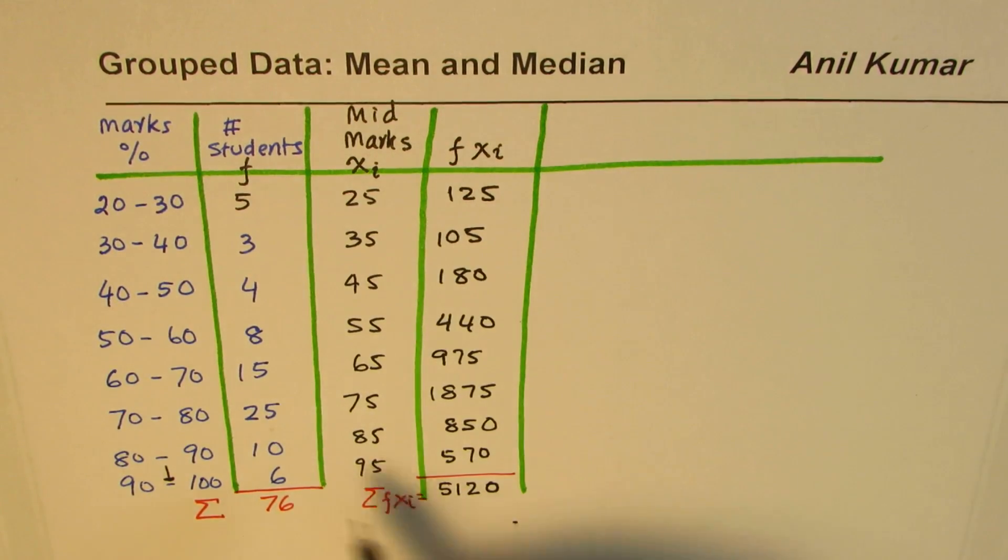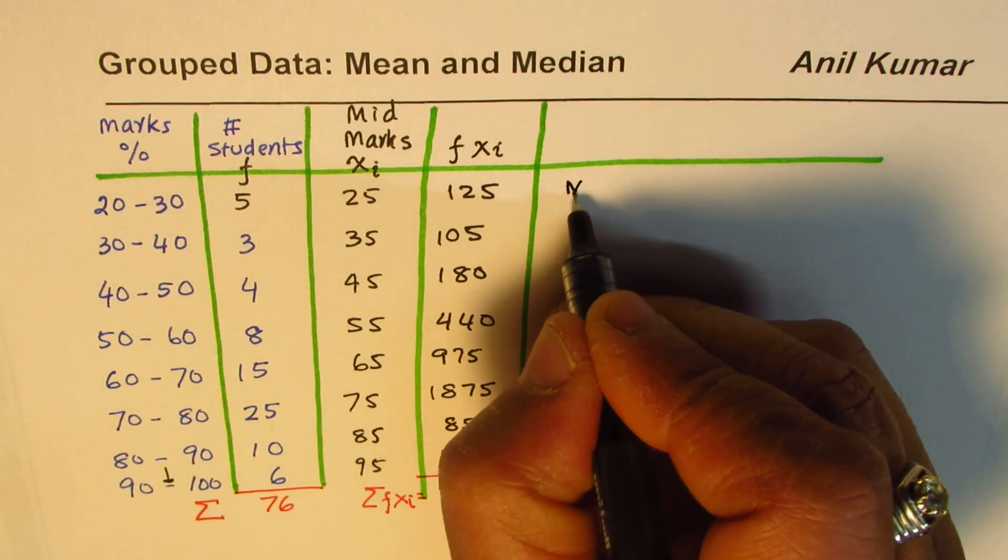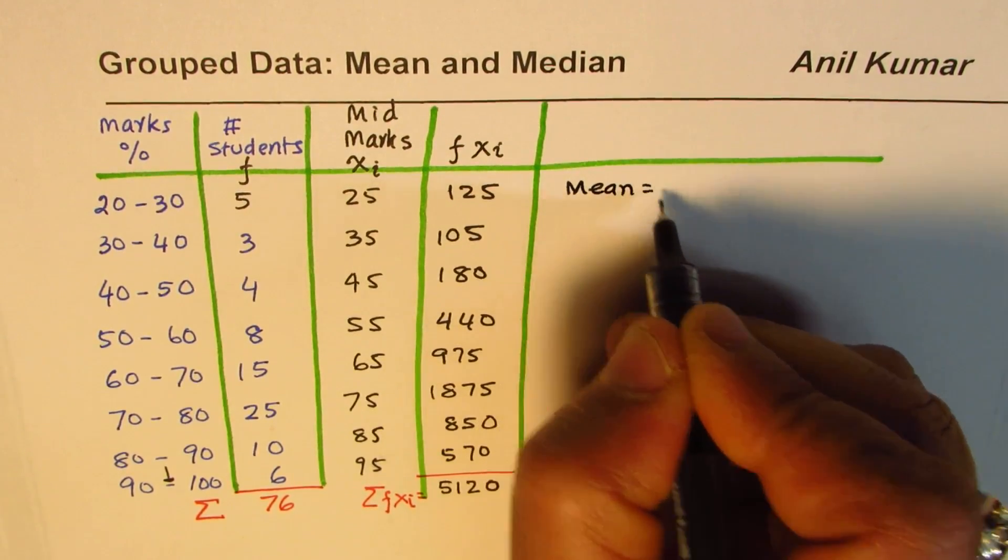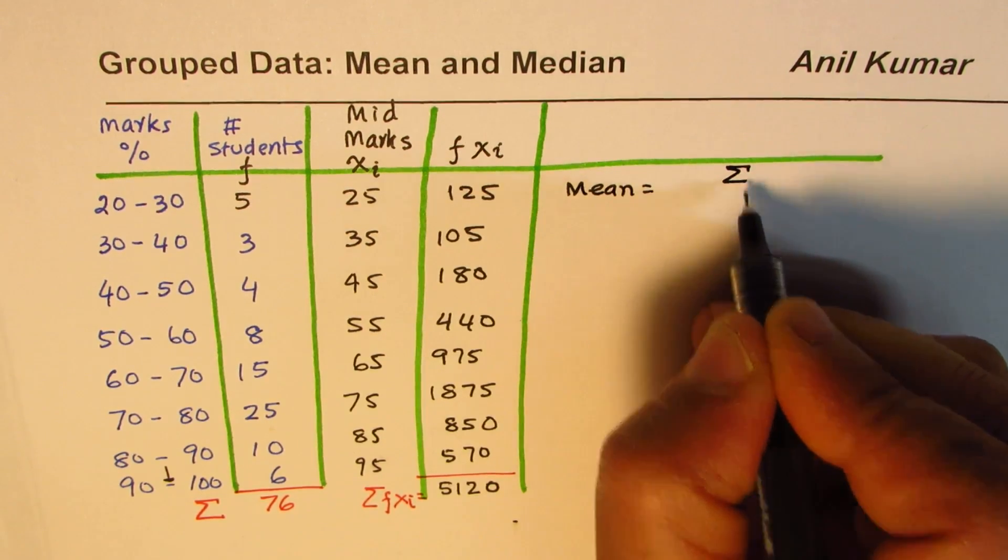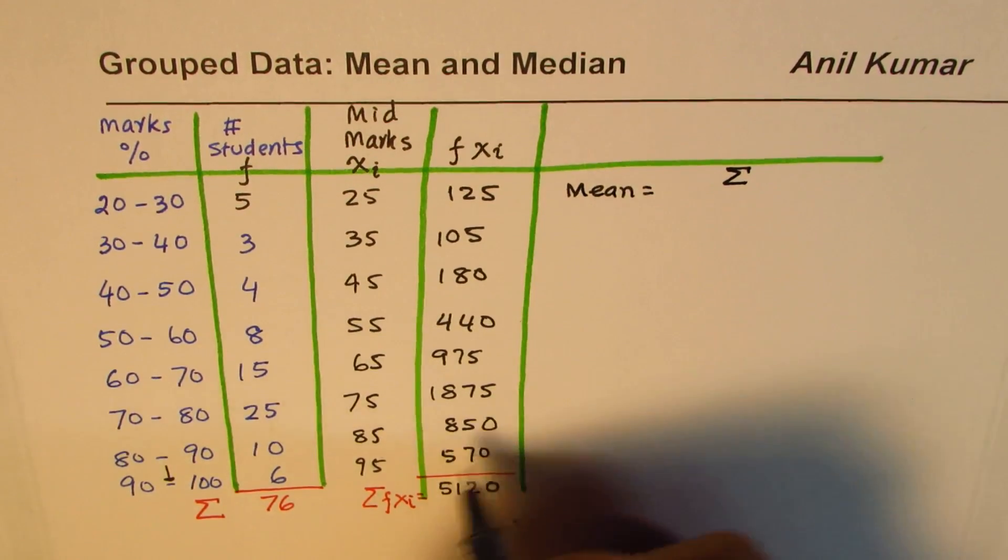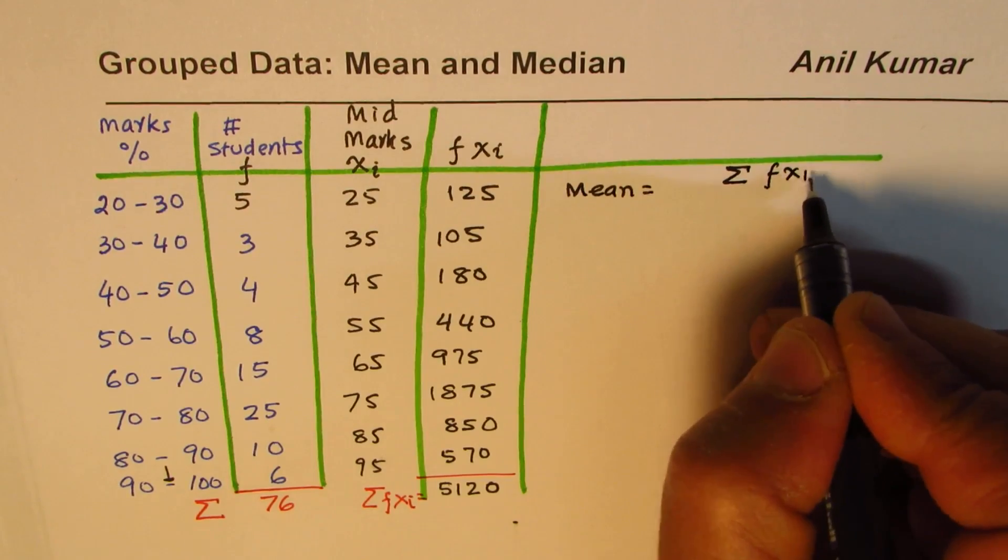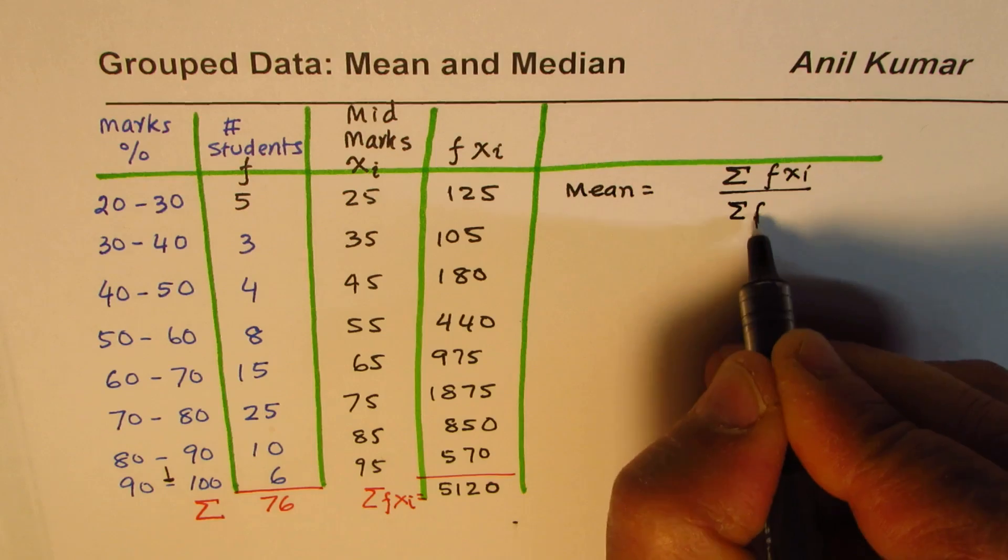Now we know total number of students and total marks on average. This is an approximate value since we are not taking exact marks obtained by each student. Mean is equal to the quotient of sum of fxi divided by total number of students.